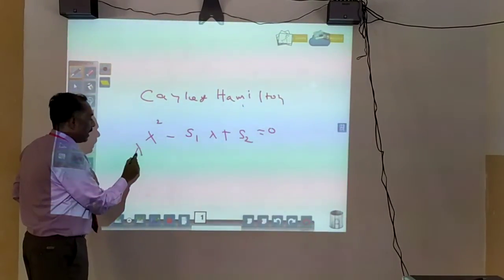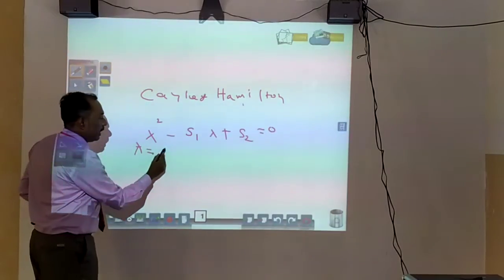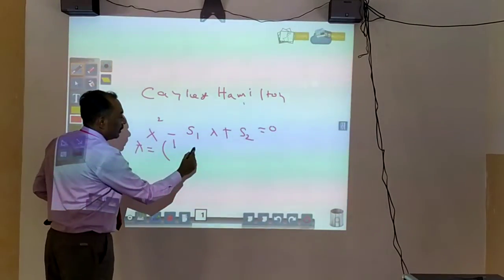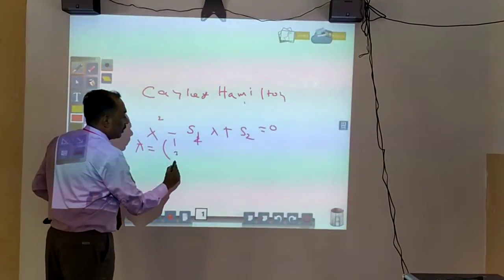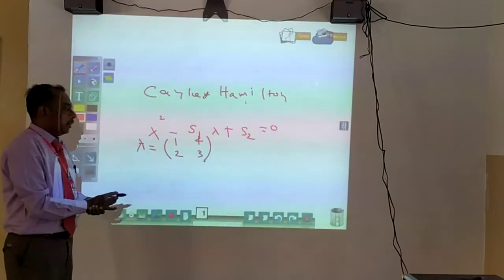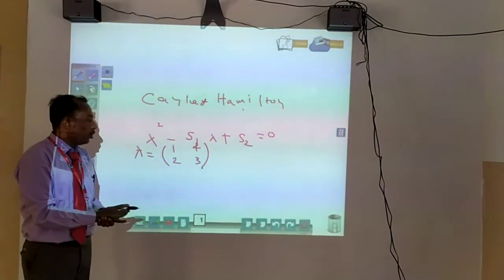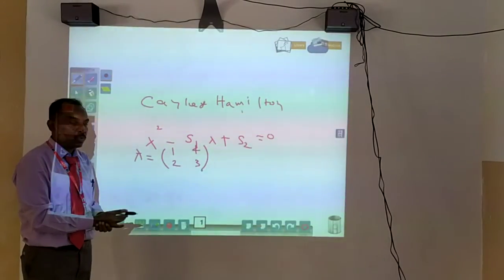Now I take a matrix. The matrix is defined by A. This is a 2 by 2 matrix. The first row is 1, 0, the second row is 2, 3.